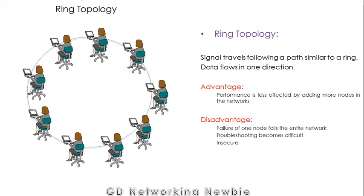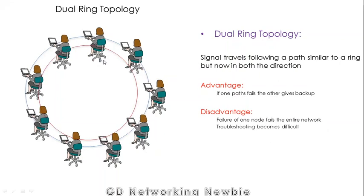In ring topology, the signal travels following a path shaped like a ring. Performance is less affected by adding more nodes compared to bus topology. The drawback is that if any one node fails, the connection breaks and the entire network fails — no communication is possible. It is also difficult to troubleshoot because it can be hard to identify which node is causing the problem.